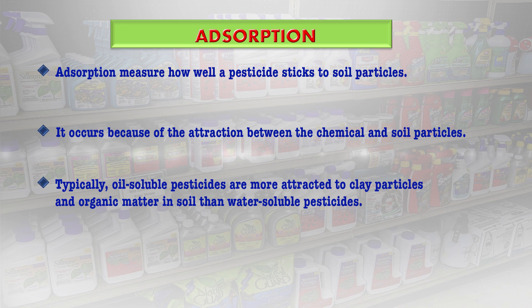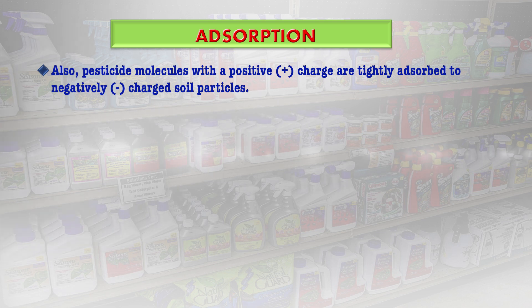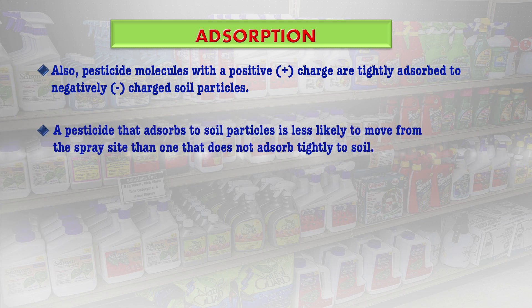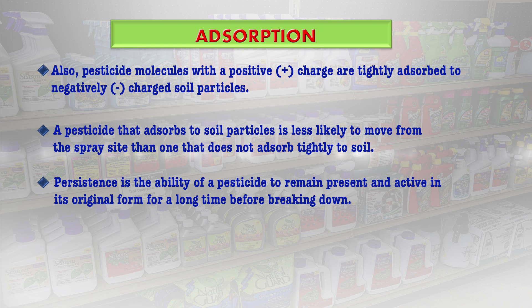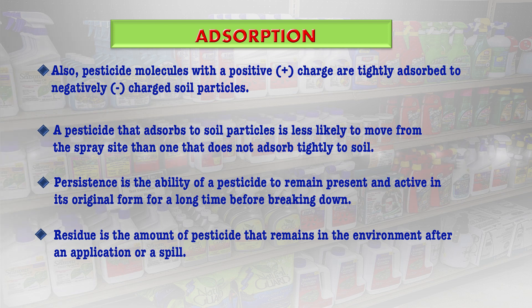Oil-soluble particles are more attracted to clay particles and organic matter in soil than water-soluble pesticides. Pesticide molecules with a positive charge are tightly adsorbed to negatively charged soil particles. Any pesticide that adsorbs to soil particles is less likely to move from the spray site than those that do not adsorb tightly. Persistence refers to the duration a pesticide spends in the environment — the ability of a pesticide to remain present and active in its original form for a longer duration before breaking down. Residue is the amount of pesticide that remains in the environment after application or accidental spill.